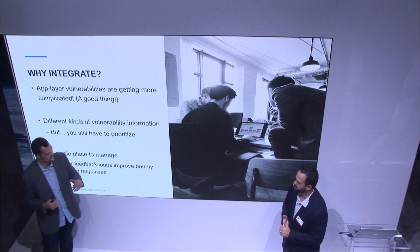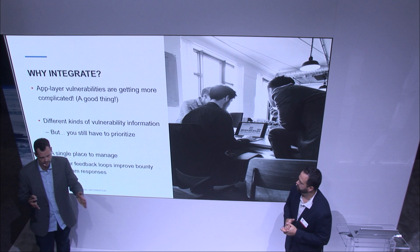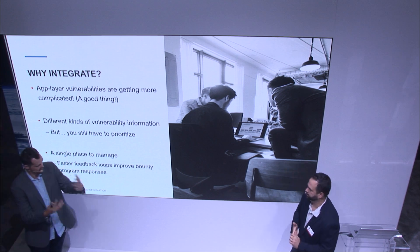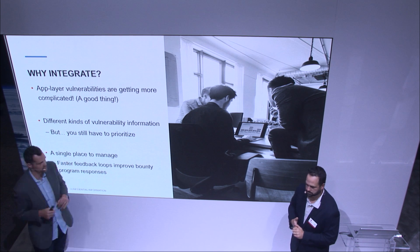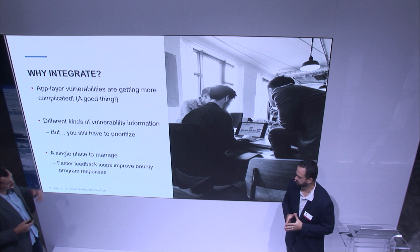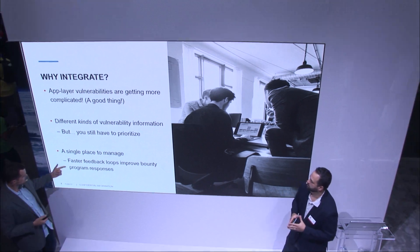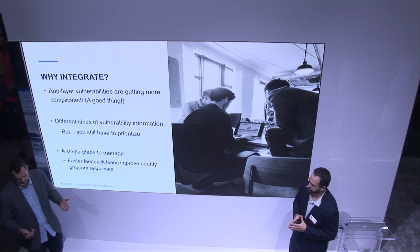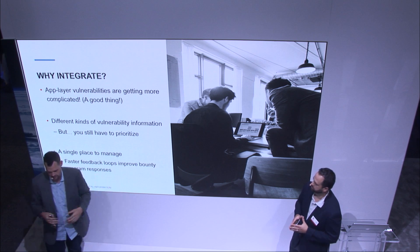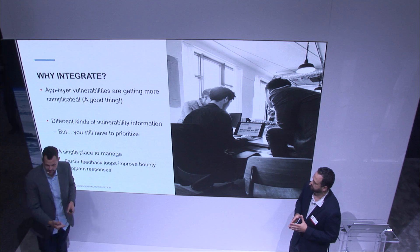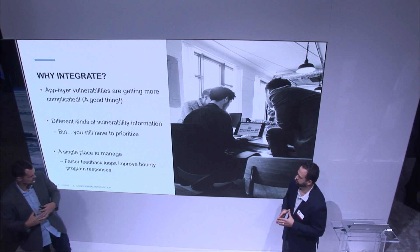Customers are already running Qualys and adding on a layer of bug bounty. They find different things — there is some overlap, but by and large you need both controls. Folks are running DAST with Qualys to scan their applications and also running a bug bounty, and those things need to work together. You need to share information between those platforms — different kinds of vulnerability information. At the end of the day you have to prioritize, and a single place to manage is what we're trying to create. Fast feedback loops are really important when running a bug bounty — being able to say 'we've already found this with a scanner' or 'someone else has already found this.' The faster those feedback loops, the faster you have success with your program.